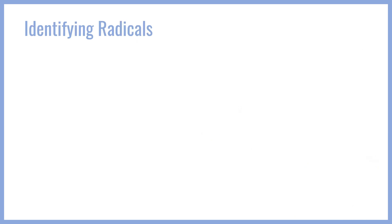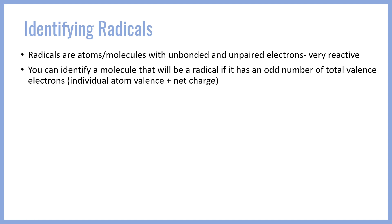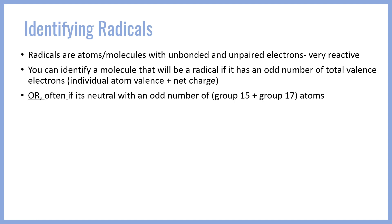At this point, I want to move on to the second part of the video: identifying radicals and drawing their Lewis structures. Radicals are atoms or molecules that have unbonded electrons that are also unpaired — lone unbonded electrons that are very reactive. You can identify whether a molecule will be a radical just from its formula based on whether it has an odd number of total valence electrons — the sum of the individual atom valences plus any net charge assigned to the molecule if it's a polyatomic ion.